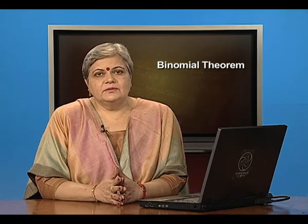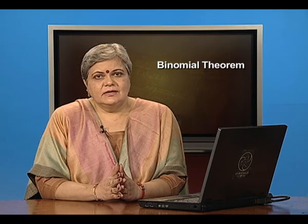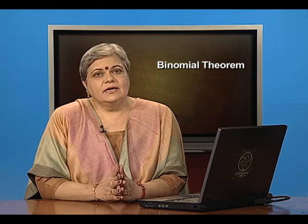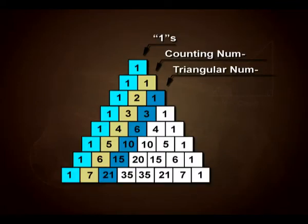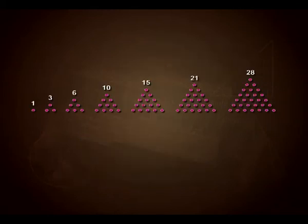We will take up more problems and applications of binomial theorem in our next few lessons. For now, let us focus on identifying certain patterns in Pascal's triangle. Looking at the diagonals: the first diagonal (other than the all-ones boundary) gives natural numbers 1, 2, 3, 4, 5, 6. The third diagonal represents triangular numbers: 1, 3, 6, 10, 15, 21. Triangular numbers are those that can be represented as triangular dot patterns, and the number of dots gives the triangular number.